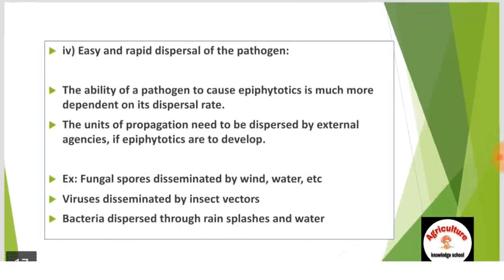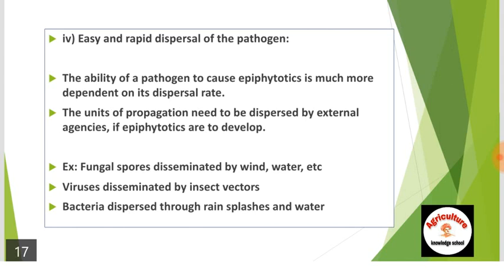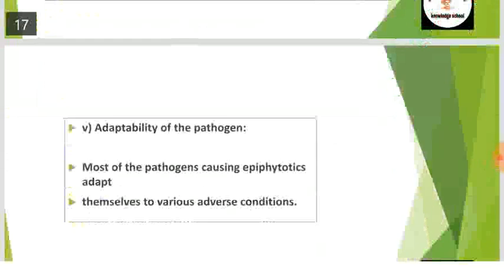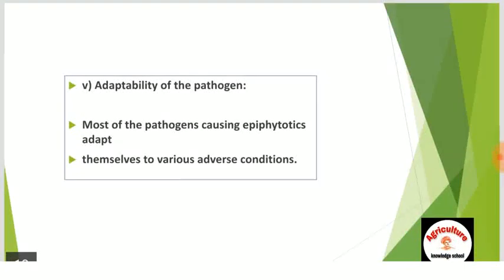Fourth is easy and rapid dispersal of the pathogen. The ability of a pathogen to cause epiphytotic is much more dependent on its dispersal rate. The units of propagation need to be dispersed by external agencies for epiphytotics to develop — for example, fungal spores disseminated by wind and water, viruses disseminated by insect vectors, and bacteria dispersed through rain splashes and water. Fifth is adaptability of the pathogen: most pathogens causing epiphytotics adapt themselves to various adverse conditions.